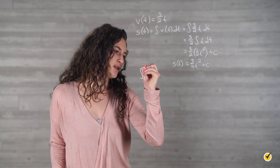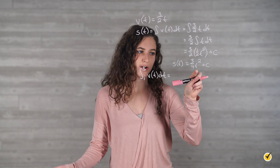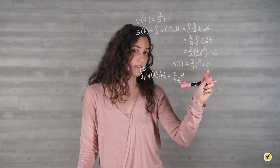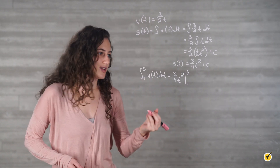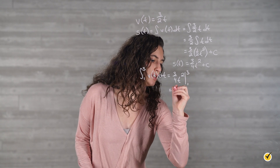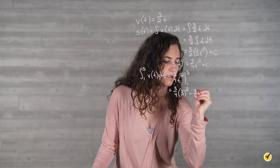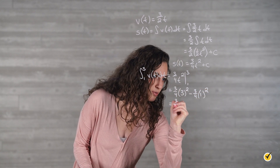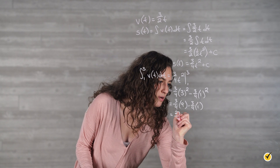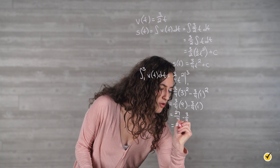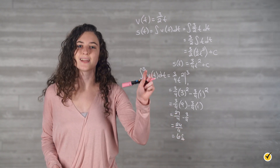To find the distance traveled, we would integrate the velocity function from 1 to 3. This gives us (3/4)t squared evaluated from 1 to 3. We plug in 3: (3/4)(3 squared) = (3/4)(9) = 27/4. Then we subtract plugging in 1: (3/4)(1 squared) = 3/4. So 27/4 minus 3/4 equals 24/4, which equals 6. So the tire would have moved a distance of 6 feet from t = 1 second to t = 3 seconds.